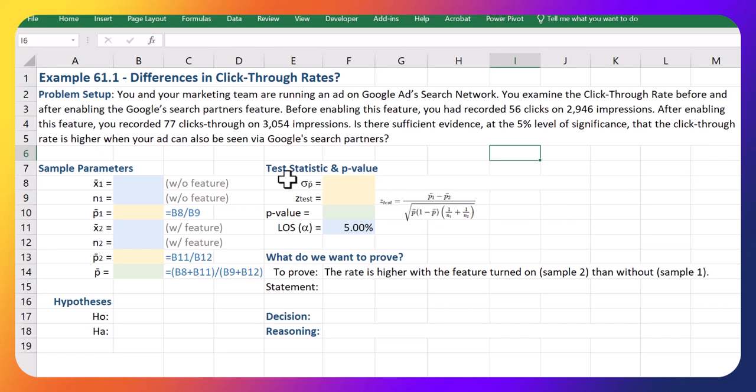I'm gonna call sample one the sample without that feature turned on—that's the 56 successes out of 2,946 impressions. Dividing those two numbers gives the click-through rate, which is also our sample proportion: 1.9 percent, or 0.019 as the sample proportion.